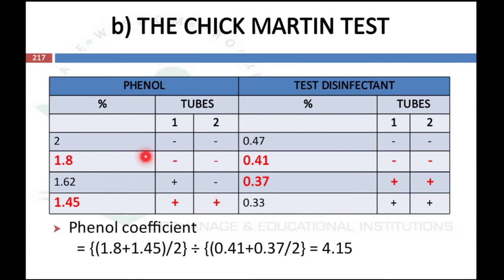We calculate the phenol coefficient as: (1.8 + 1.45) / 2 for the phenol ratio, divided by (0.41 + 0.37) / 2 for the disinfectant ratio, which equals approximately 4.15. This indicates the disinfectant is about 4.5 times more powerful than phenol.